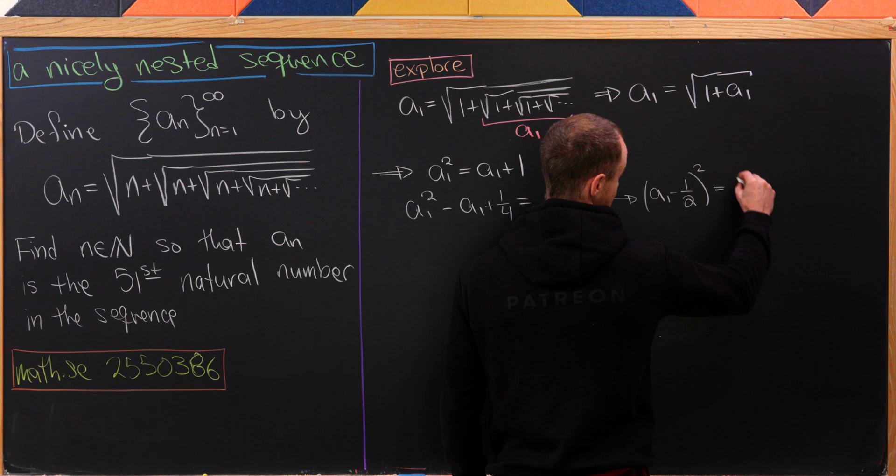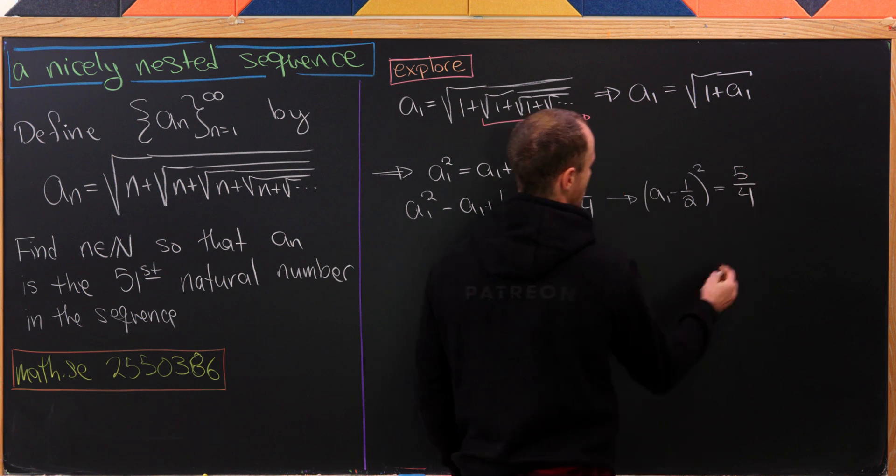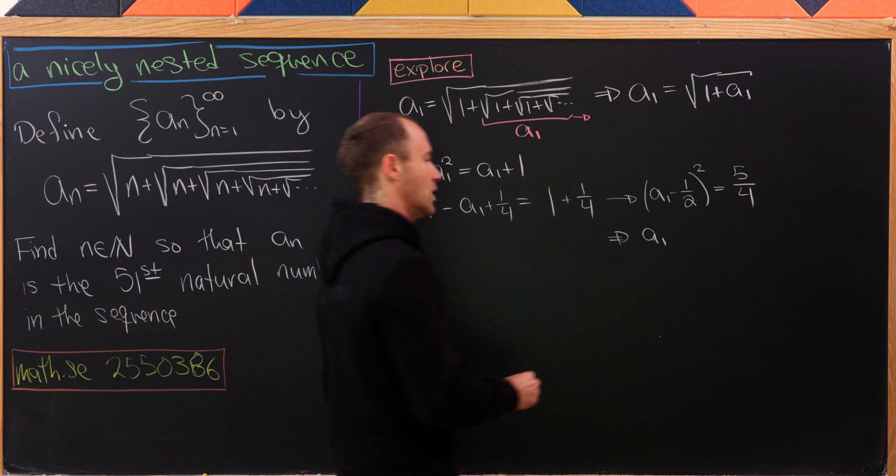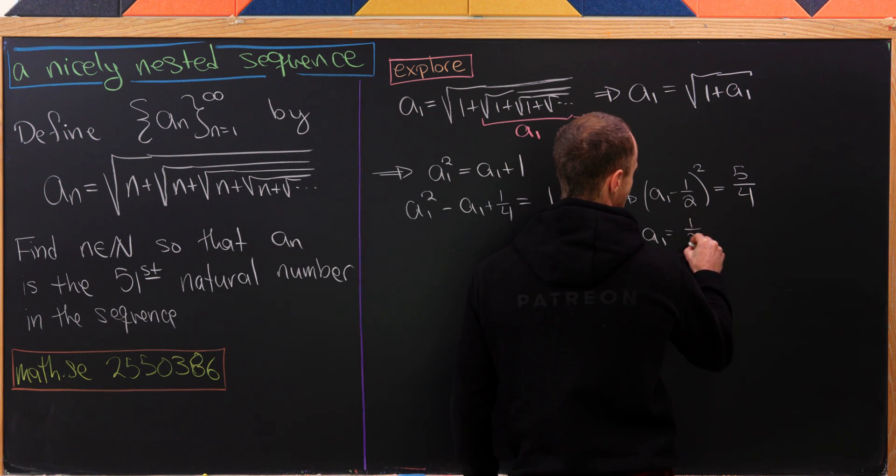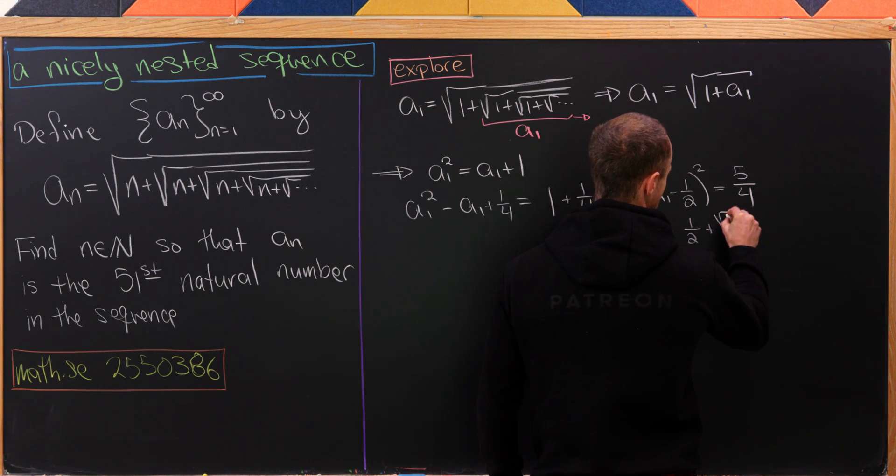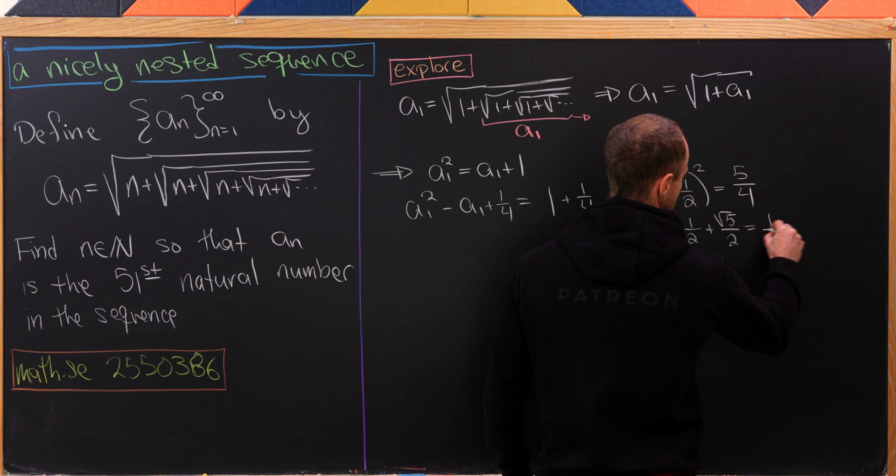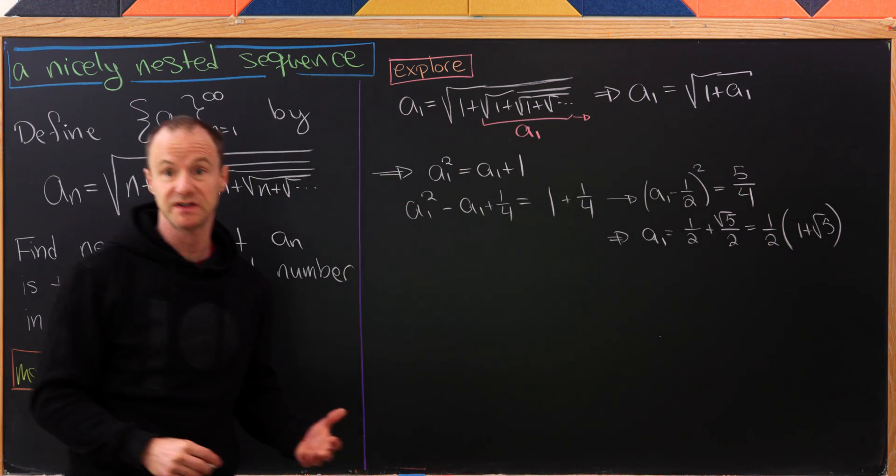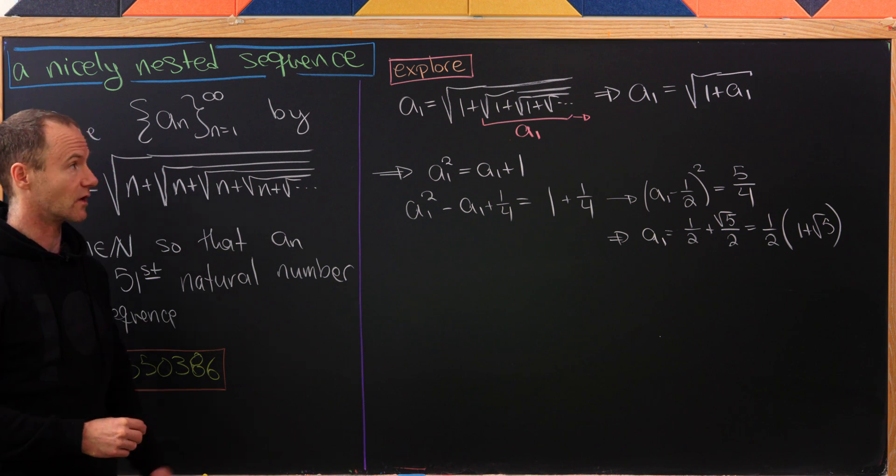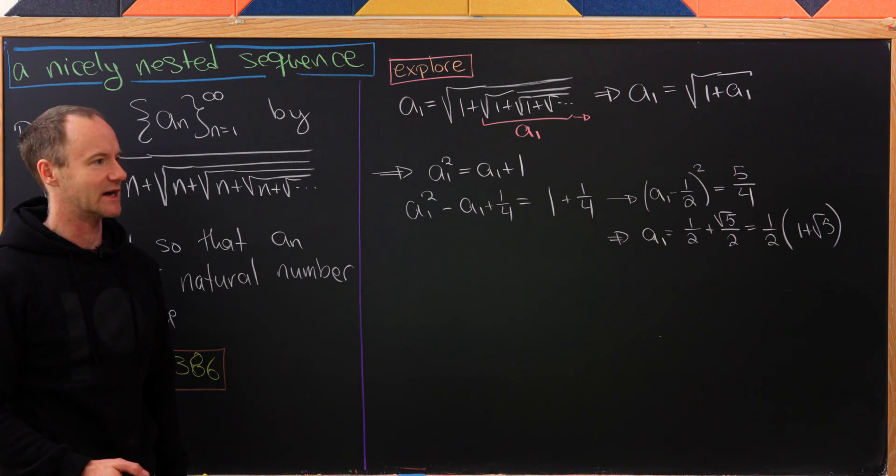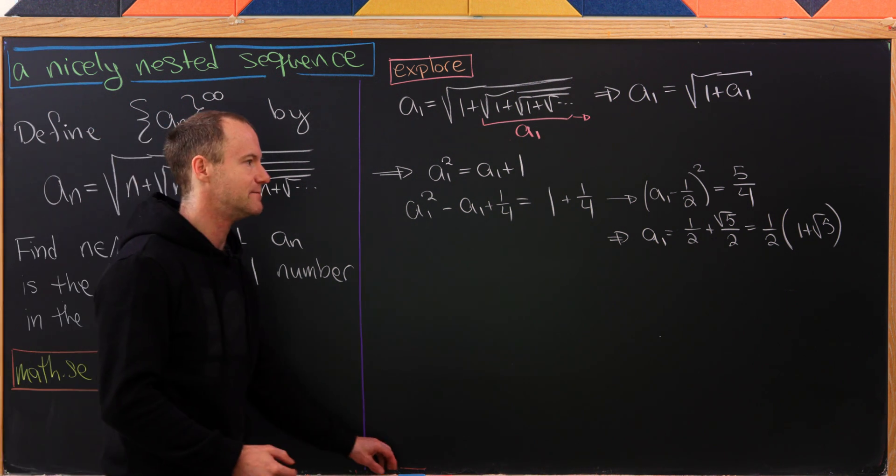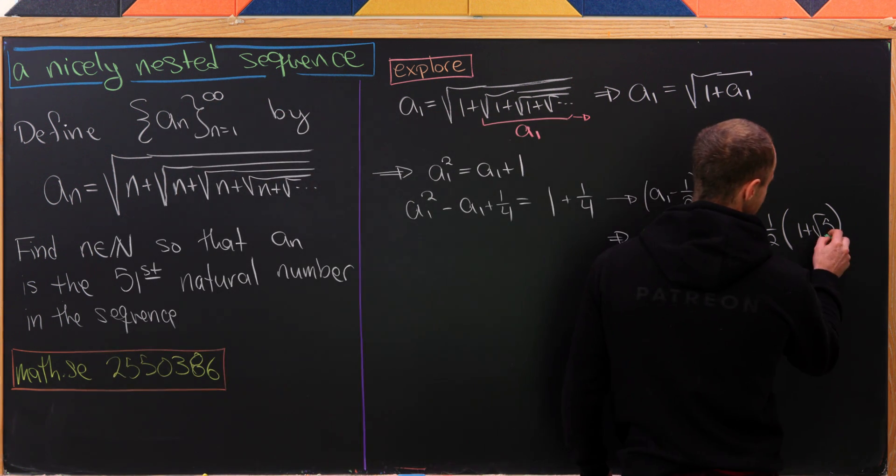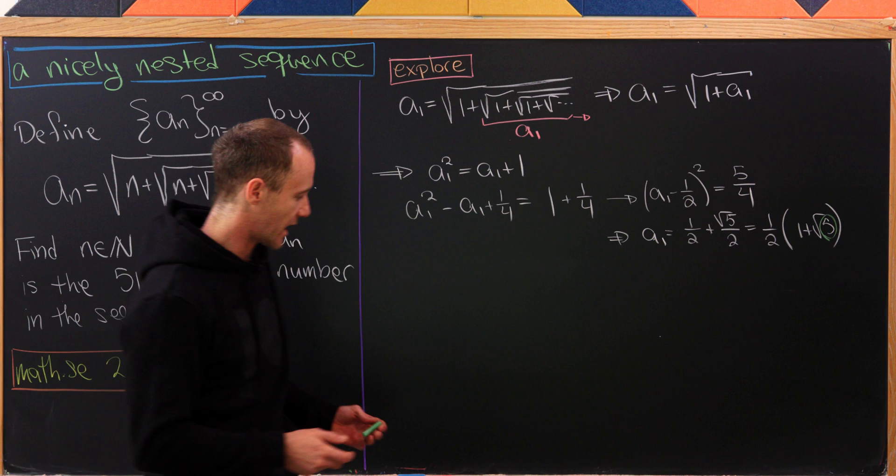The left-hand side factors as (a_1 - 1/2) squared equals 5/4. With a couple more steps, we'll see that a_1 equals 1/2 plus the square root of 5 over 2, or (1 + √5)/2. I believe that's the golden ratio, which is pretty interesting. That's not a natural number, and we can see immediately why: 5 right here is not a perfect square.